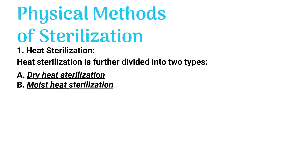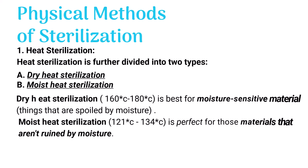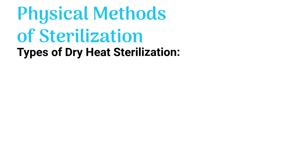Heat sterilization is further divided into two types: dry heat sterilization and moist heat sterilization. Dry heat sterilization is best for moisture-sensitive materials, while moist heat sterilization is suitable for materials that aren't damaged by moisture.